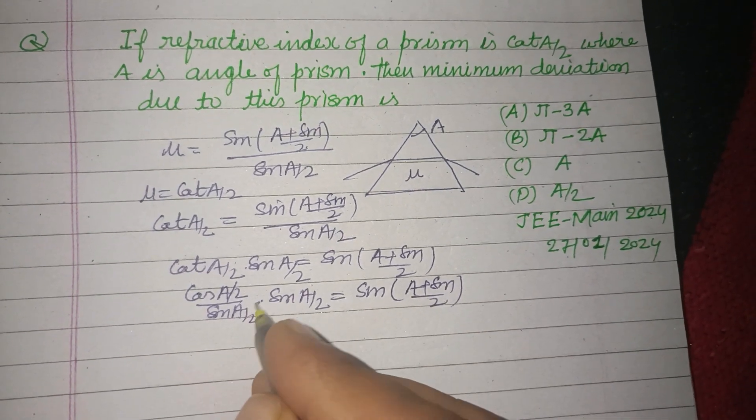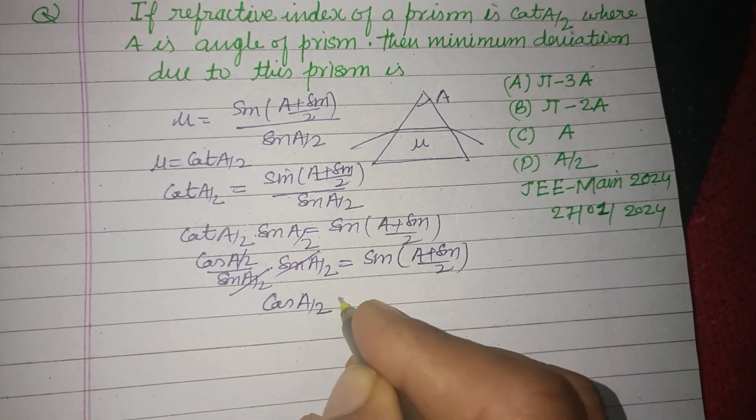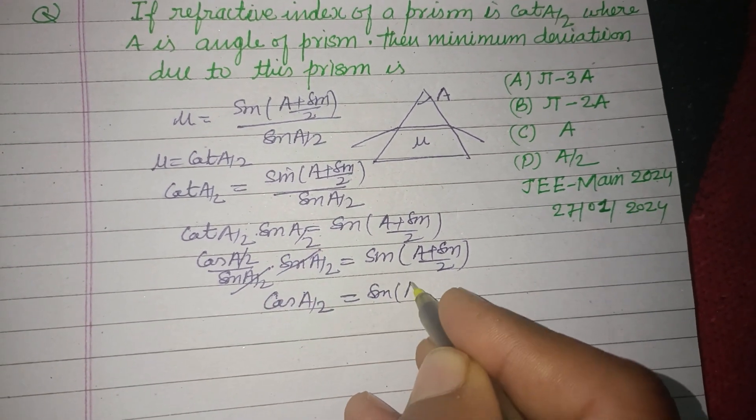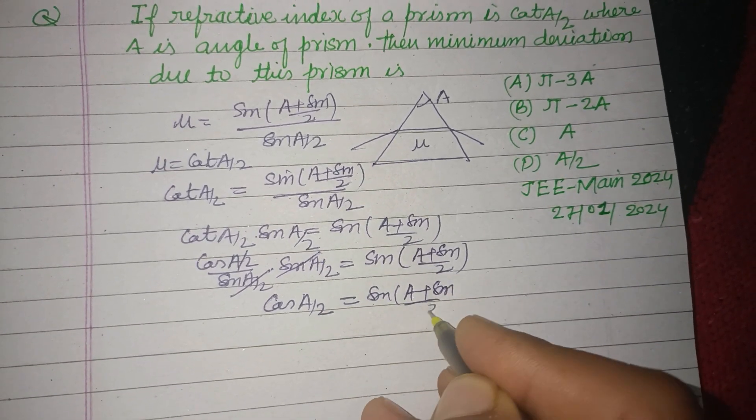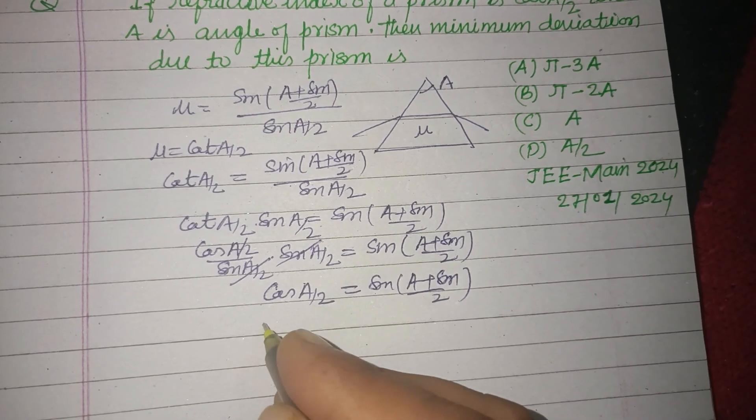sin(A/2) and sin(A/2) cancel, so we got cos(A/2) equals sin(A plus δm by 2). Here cos(A/2) can be written as sin(π/2 minus A/2).